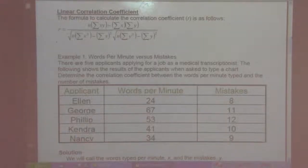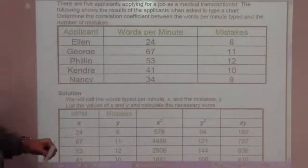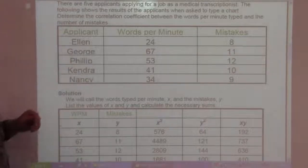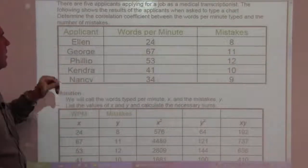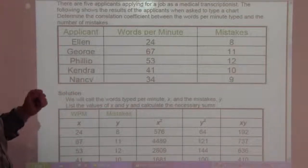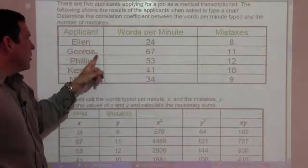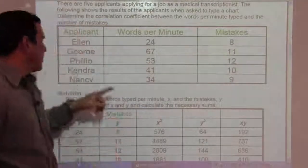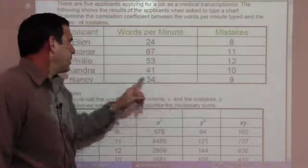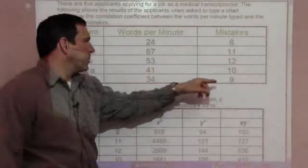Example one: words per minute versus mistakes. There are five applicants applying for a job as a medical transcriptionist. The following shows the results when asked to type a chart, to determine the correlation coefficient between words per minute typed and number of mistakes. Ellen: 24 words per minute, 8 mistakes. George: 67, 11 mistakes. Phillip: 53, 12 mistakes. Kendra: 41, 10 mistakes. And Nancy: 34, 9 mistakes.